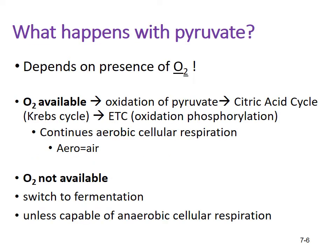What happens with the pyruvate produced in glycolysis depends on what kind of organism you are and whether oxygen is available. If oxygen is available, we go on to the oxidation of pyruvate, the citric acid cycle or Krebs cycle, and then the electron transport chain or oxidative phosphorylation — basically the cell continues with aerobic cellular respiration. 'Aero' means air, and in this case the air we're talking about is oxygen.